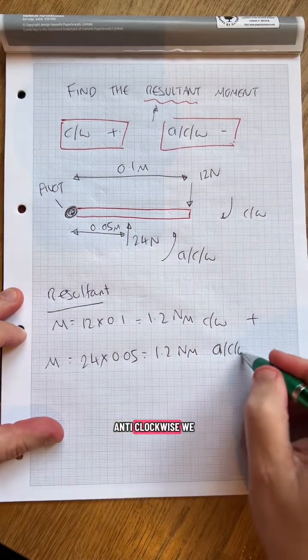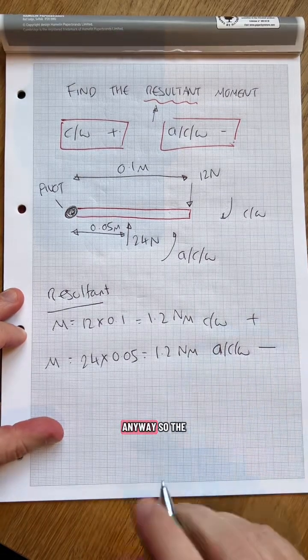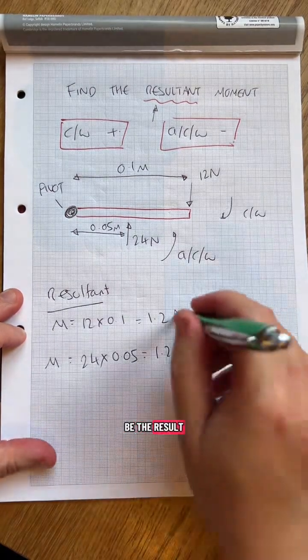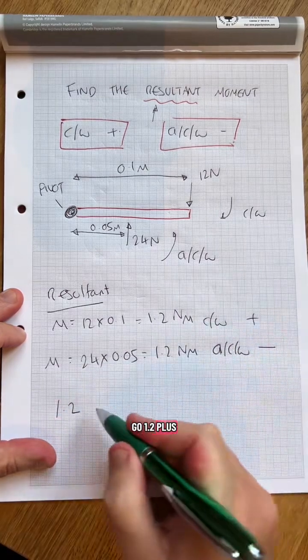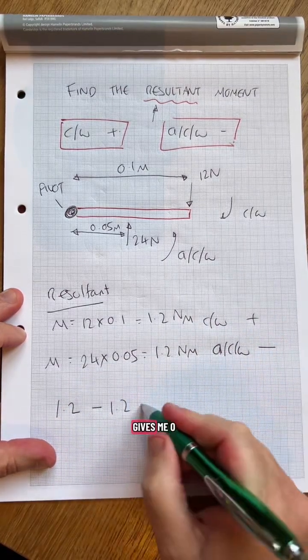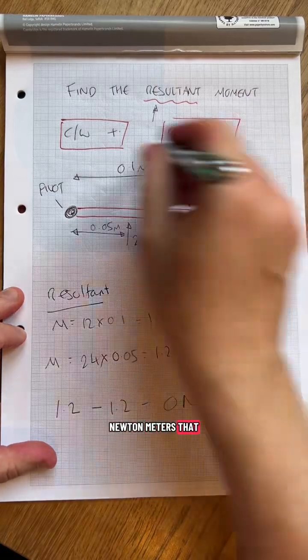Anti-clockwise we call that minus. So the resultant is going to be the result of these two. I'm going to go 1.2 plus take away 1.2, gives me 0 newton meters.